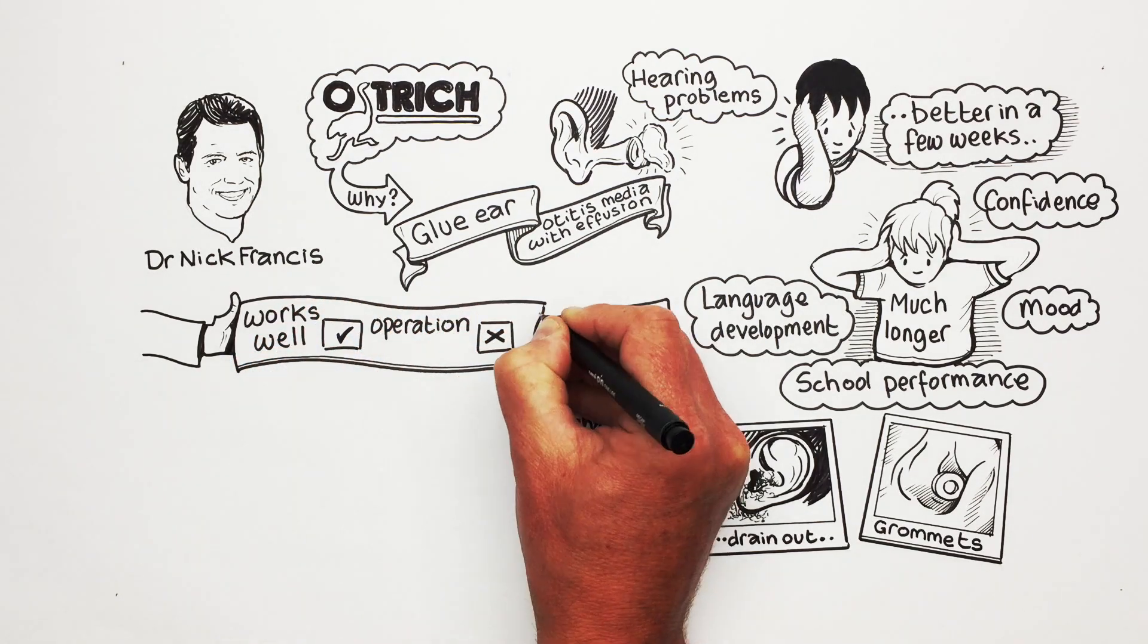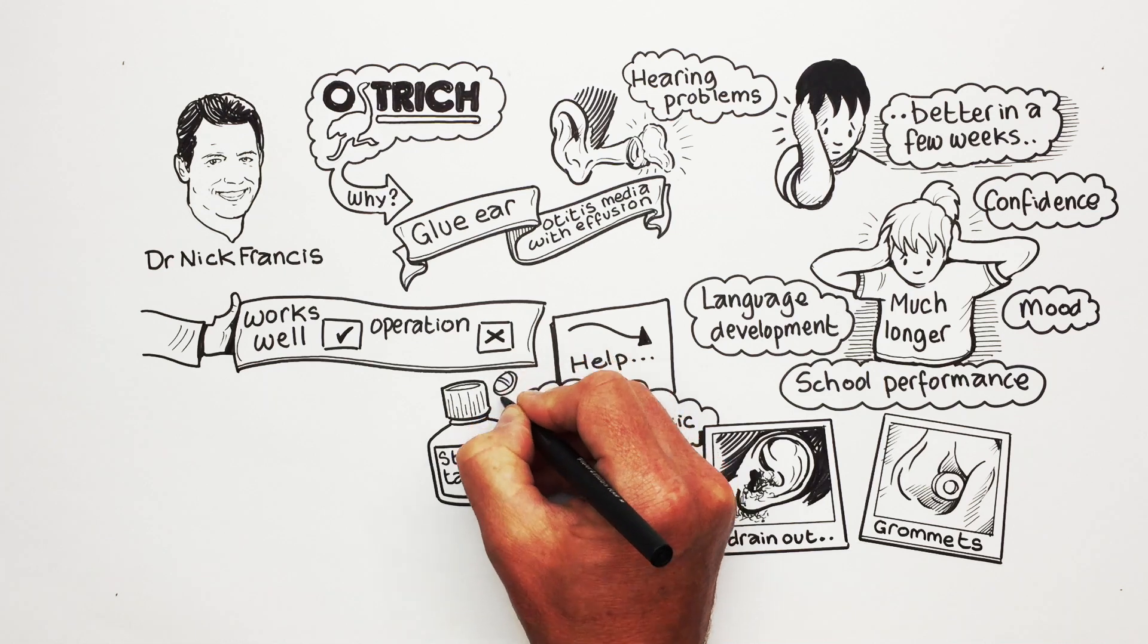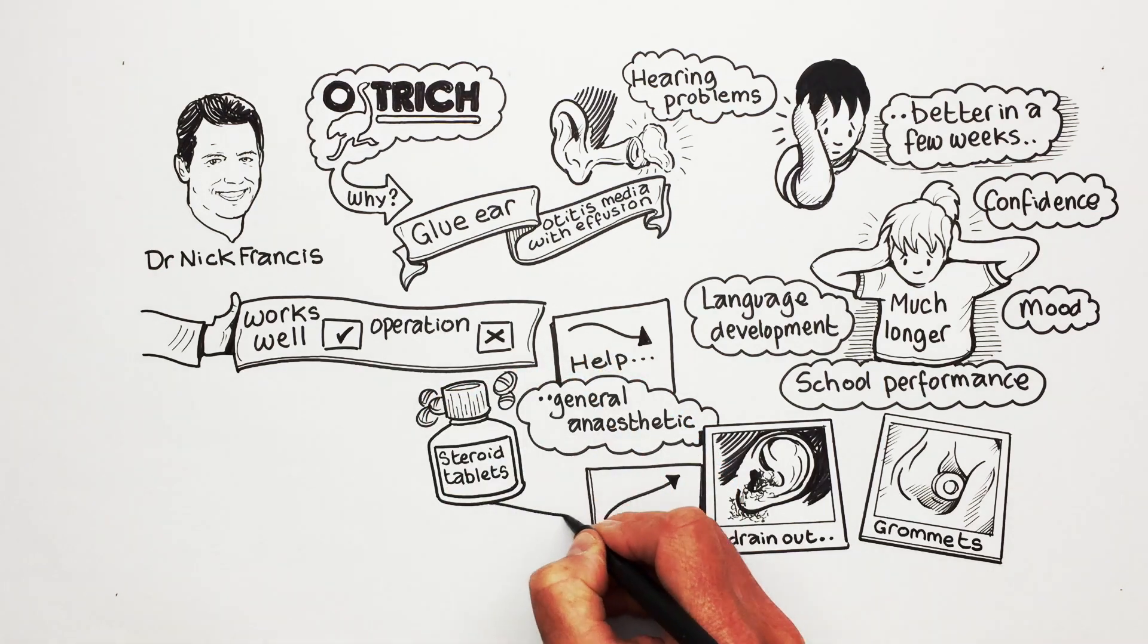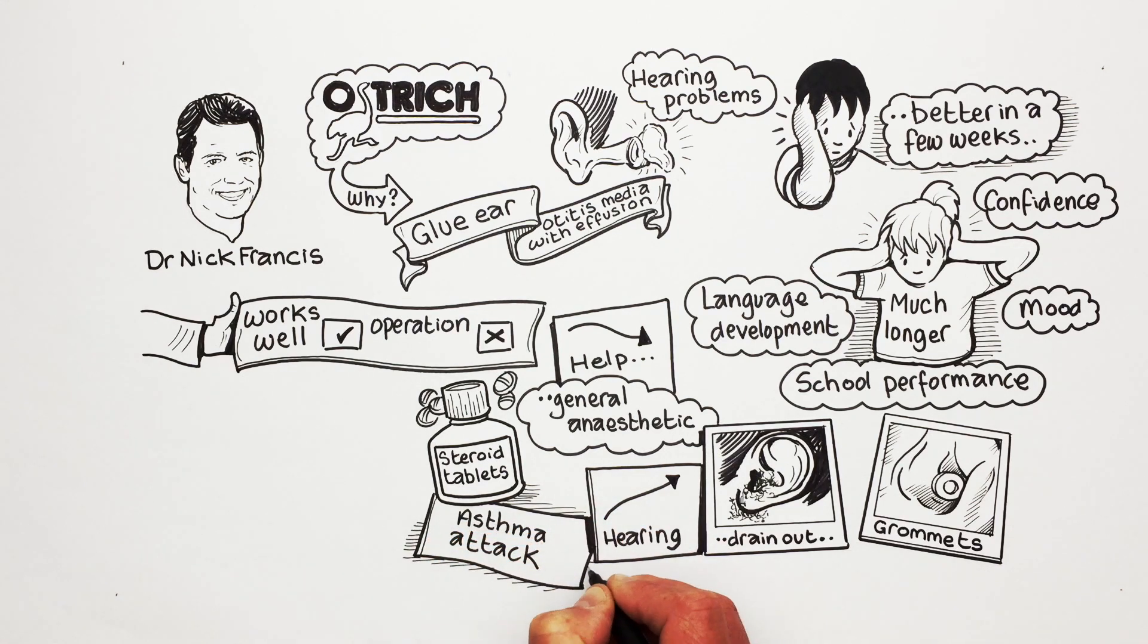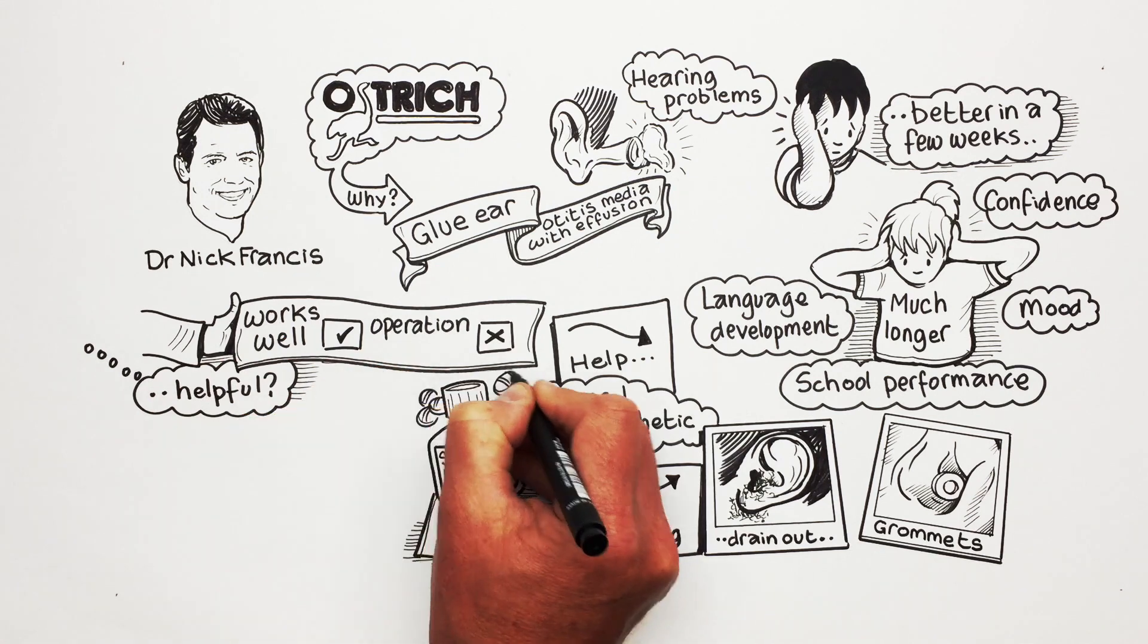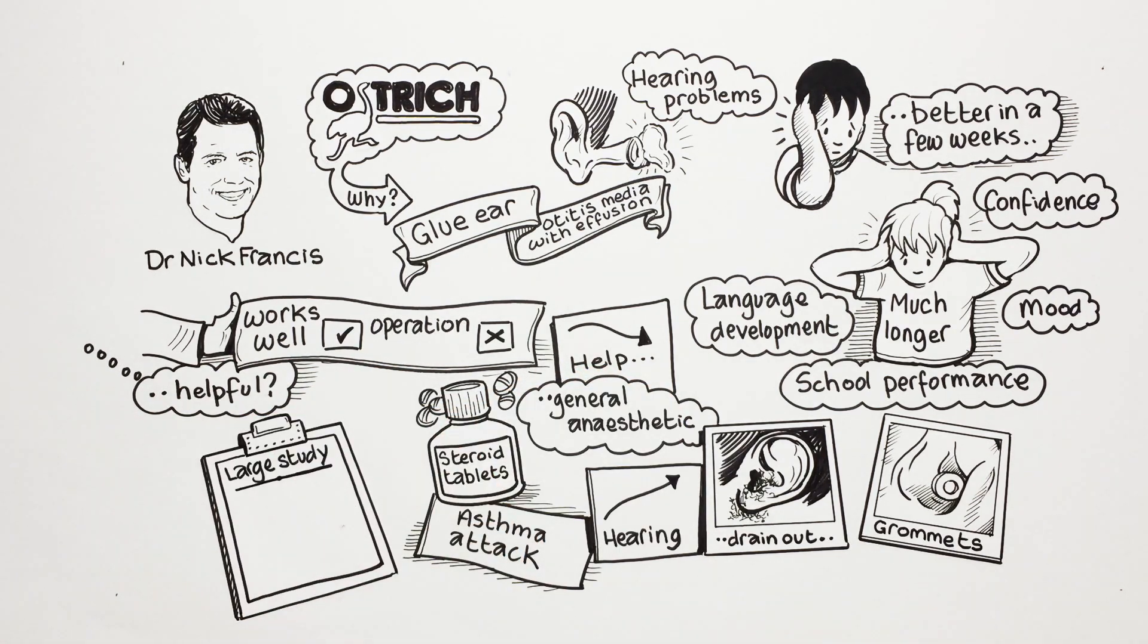Previous research studies have suggested that a short course of steroid tablets, such as those taken by children with an asthma attack, might help glue ear clear up. But these studies could not tell us for certain if this treatment is helpful. So we decided to do a large study to find out if steroid tablets really do improve hearing loss caused by glue ear in children.